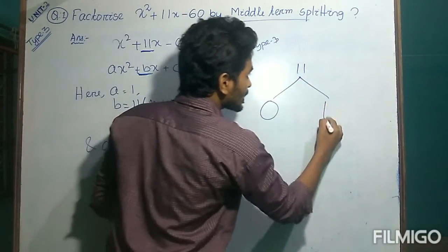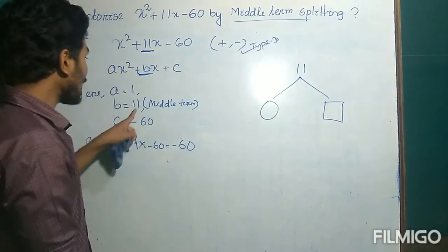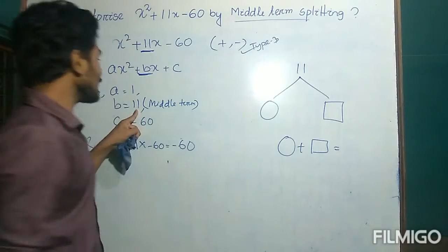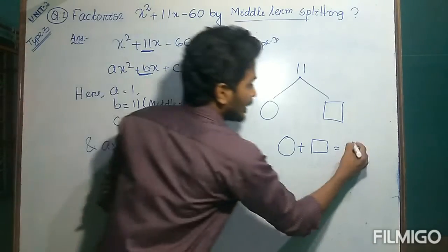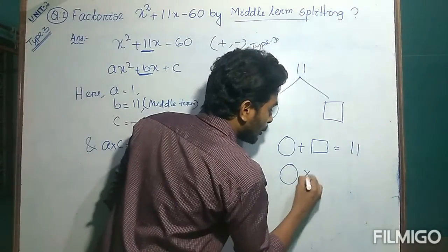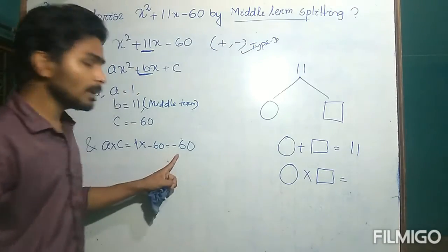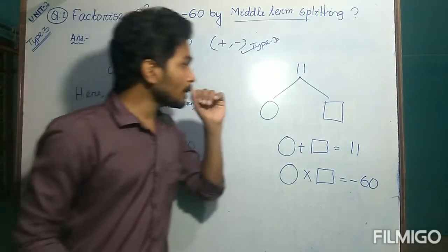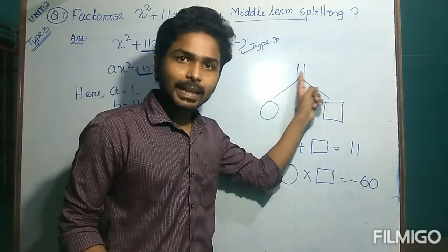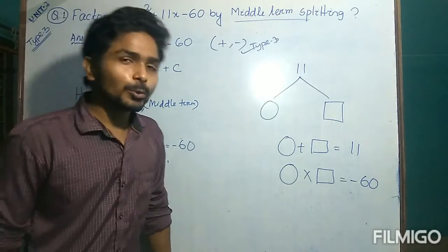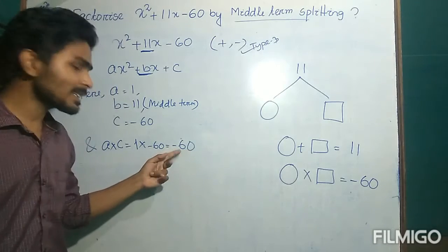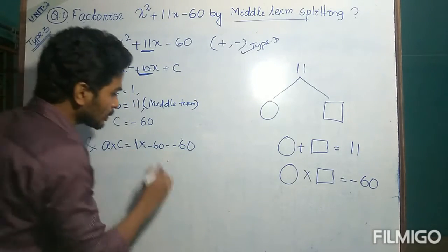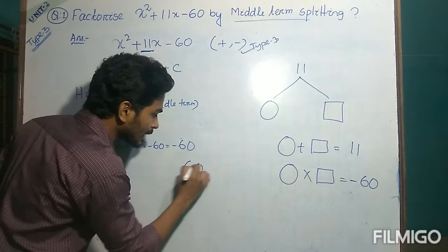This is the first part and this is the second part. Whenever these two parts are added, they should give 11, and when they are multiplied, they should give minus 60. So first we have to break it into two parts. In order to break it into two parts, we have to factorize 60. Since it is minus 60, neglect the negative sign. Now we will factorize 60.